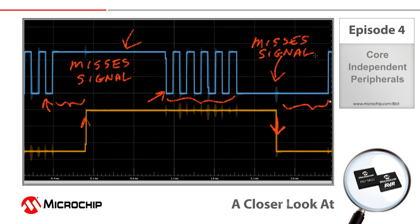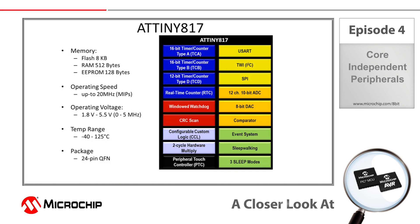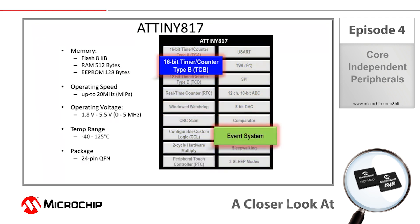Okay, so let's take a look at an alternative solution here using core independent peripherals. Here is the ATtiny817 and this is an AVR device which has among other peripherals a timer-based peripheral called the timer counter type B or TCB for short, and another peripheral called the event system.